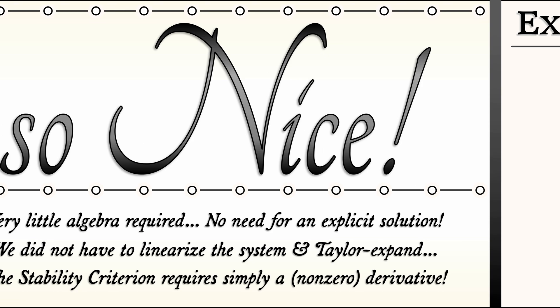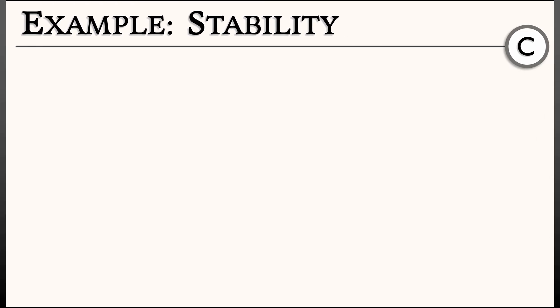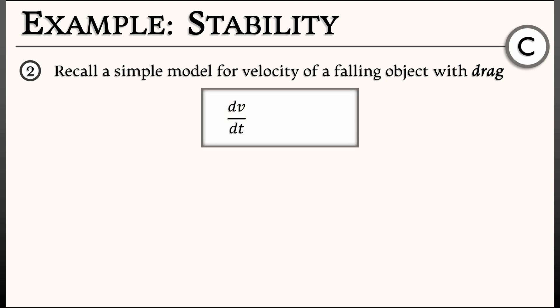Let's see how this works in a different example. Recall the simple model for the velocity of a falling body where there's some drag force. This is something we saw earlier in this chapter. The model is this: dv/dt equals negative g plus kappa v squared. Here, v is the velocity of your falling body. g is positive and is equal to the gravitational constant. And kappa is a positive constant that is a drag coefficient.